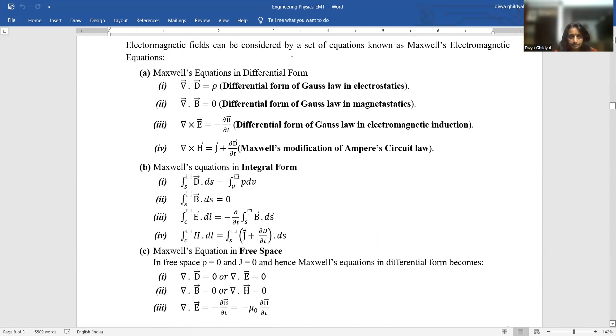Now I will explain you in short. Differential form - look at the first equation. Del dot D equal to rho, differential form of Gauss law in electrostatics. Divergence B equal to zero, differential form of Gauss law in magnetostatics, or magnetic lines are closed curves. Del cross E equal to minus del B by del T, or curl E equal to the differential variation of del B by del T. That means as and when I vary my magnetic field, electric field gets produced simultaneously. That is differential form of Gauss law in electromagnetic induction.